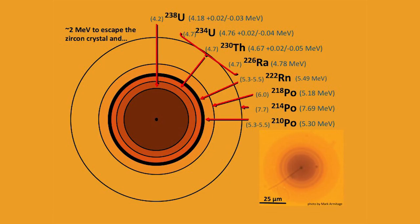We're able to identify the element that decayed to produce any given ring. The only one that really doesn't fit is polonium-218, which is interesting — there may be something cool being told to us there that we don't yet understand. But otherwise they fit very nicely, so we interpret these as the decay products of uranium-238.